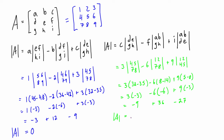That gives us exactly what we were expecting: the determinant of matrix A equals zero. If you try this method with any other rows or columns, as long as you don't make any errors, you'll find the determinant of this matrix is always equal to zero.